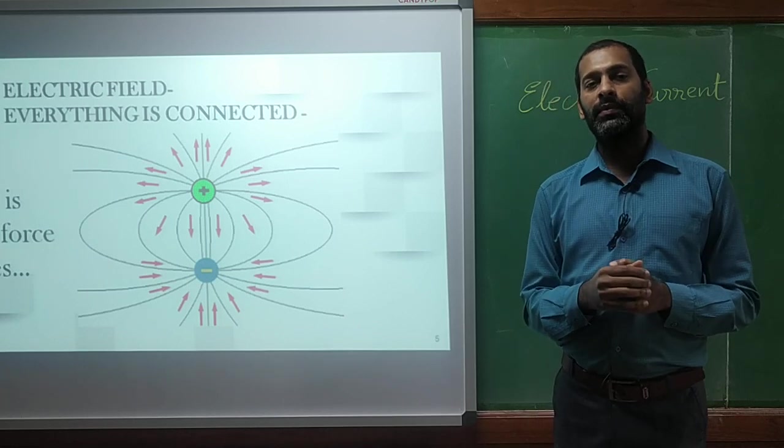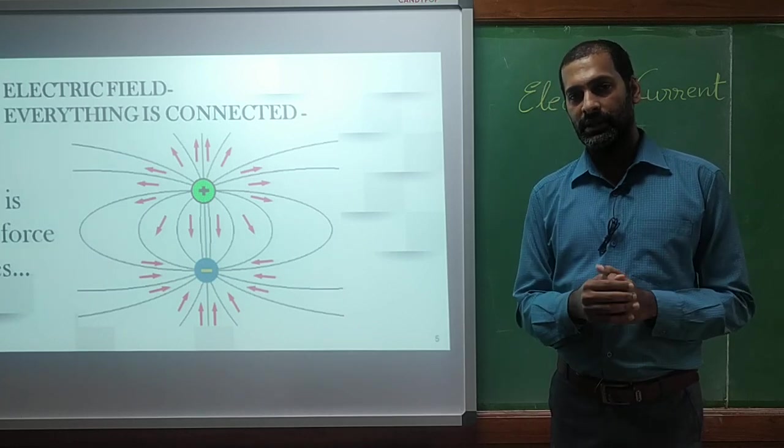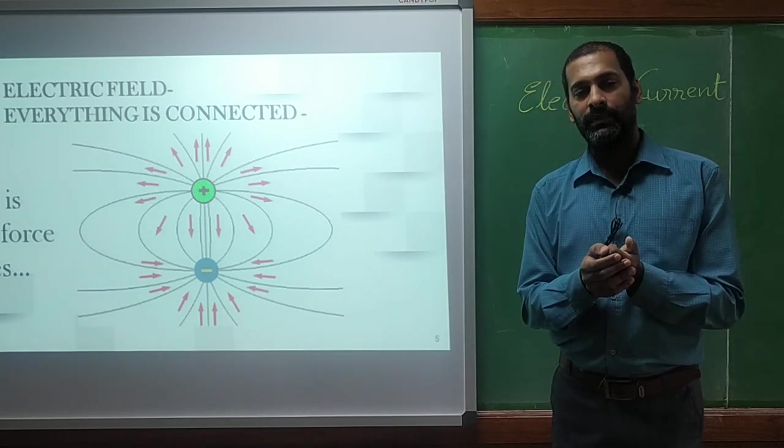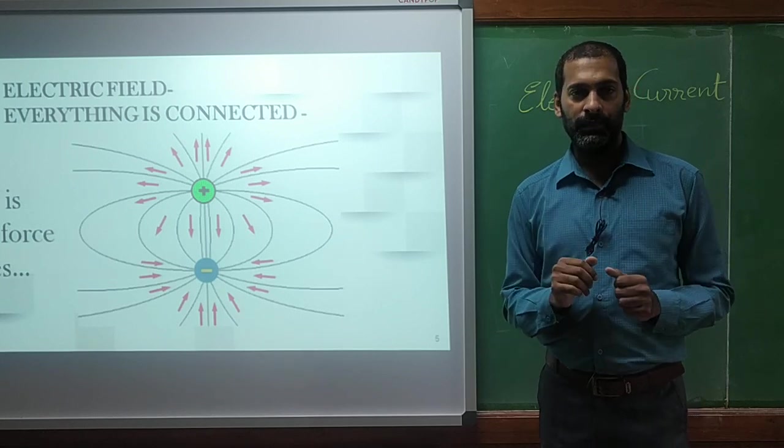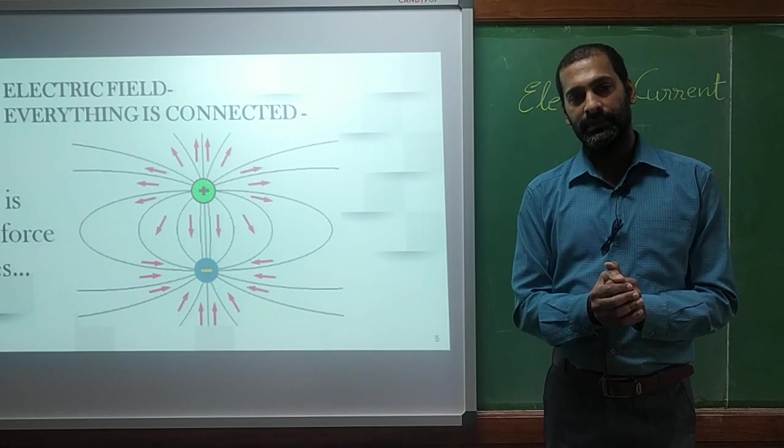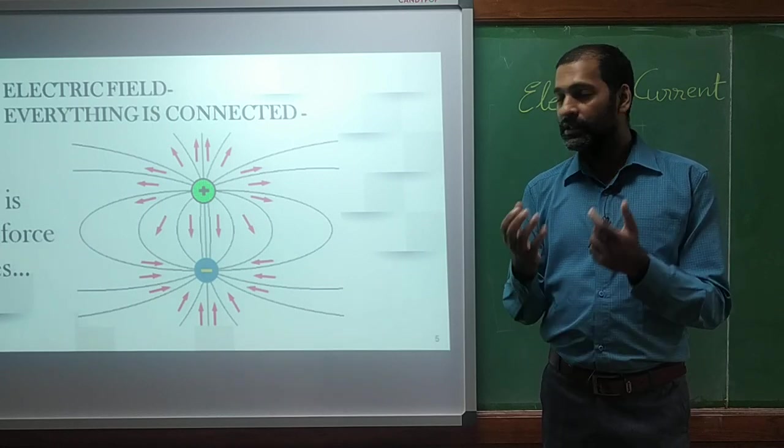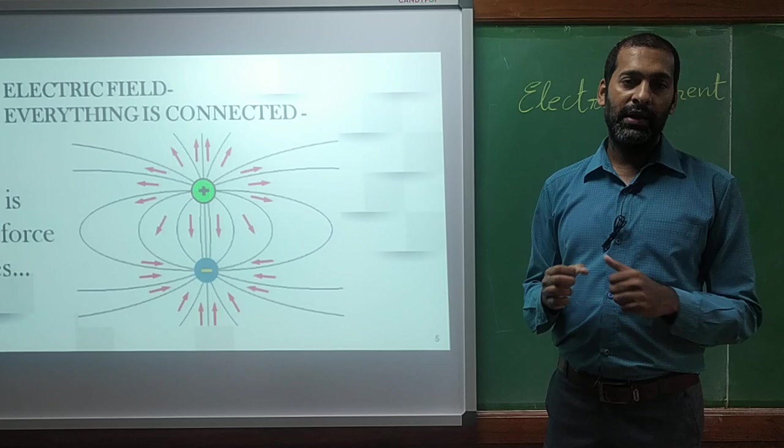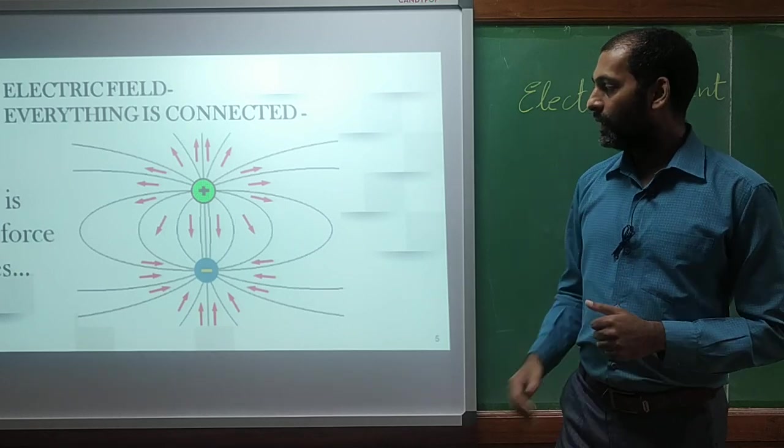We consider electrons as very minute points. We cannot see them. But if there is a point and if we zoom out and if we imagine their shape, what will be the shape of that particular electron or charge? It will be spherical shape like a sun. What sun do? Sun radiates the energy in all the direction.